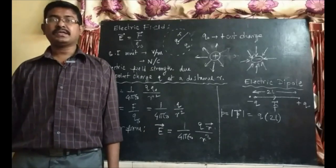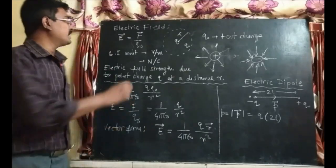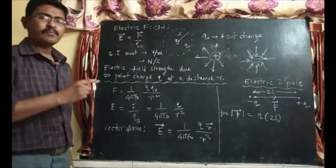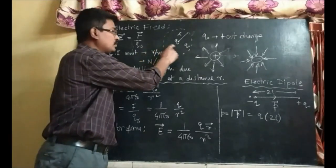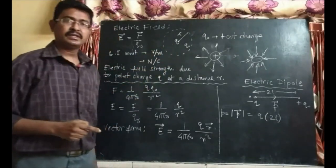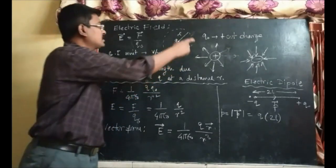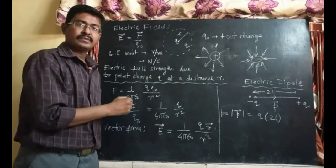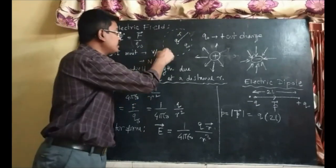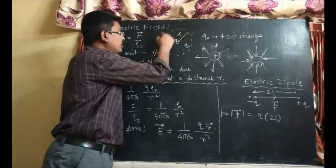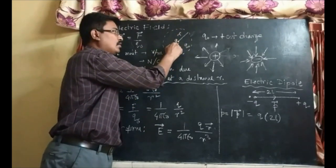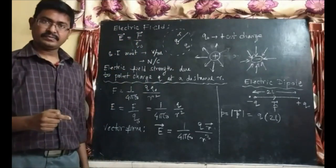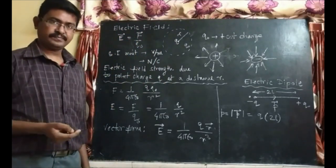The next topic is electric field. Suppose a charge is placed at a point — it has a sphere of influence. This region of influence of a charge is called the electric field. We say electric field strength.